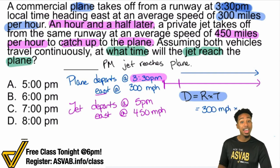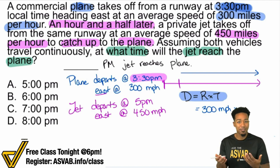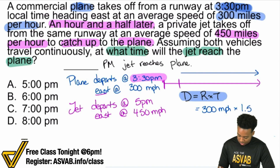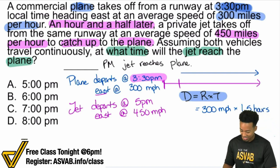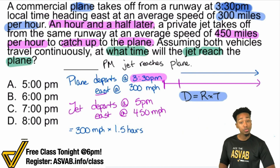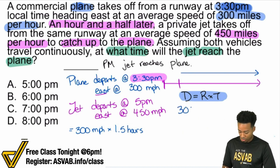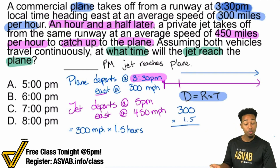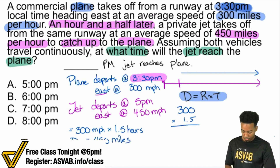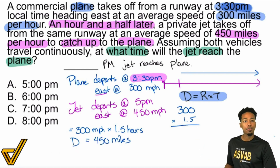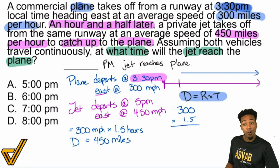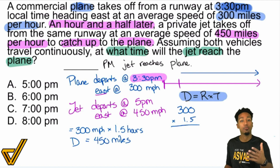The time the plane traveled before the jet takes off is an hour and a half. So we multiply 300 times 1.5 hours. If we do that math, 300 times 1.5 gives us 450 miles. That is the distance the plane traveled in that hour and a half — meaning that's the gap the jet has to catch up. So the jet has to catch up 450 miles. The answer is NOT 450 — the jet still has to catch up that distance.